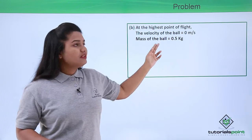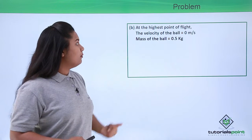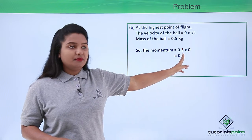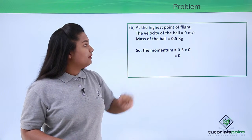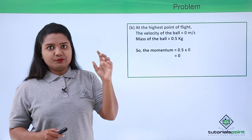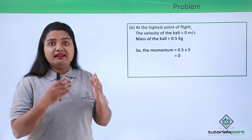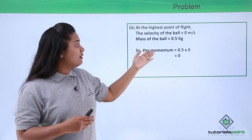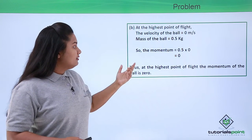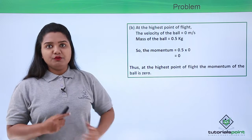So here the velocity of the ball at the highest point of the height will be 0 meters per second and the mass of the ball still remains the same that is 0.5 kg. So here the momentum of the body will be 0.5 multiplied by 0, that is the mass multiplied by the velocity of the body. So this is found to be 0 since the body has come to rest at the topmost point. We know that the momentum of a body at rest is 0 and that's the reason why we got the answer also to be 0. So here at the highest point of flight the momentum of the body was found to be 0.